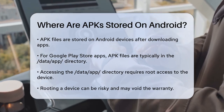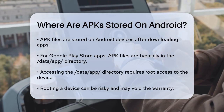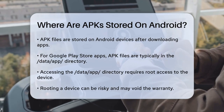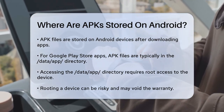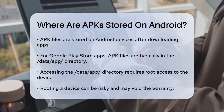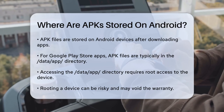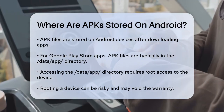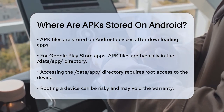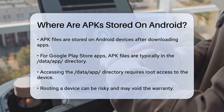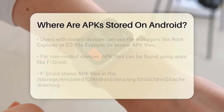For apps downloaded from the Google Play Store, the APK files are typically stored in a location that's not easily accessible without some technical know-how. These files are usually kept in the /data/app/ directory, but accessing this directory requires root access to your device.